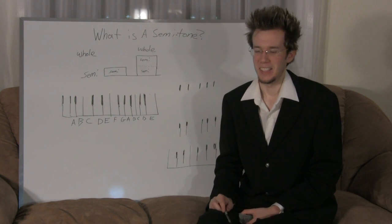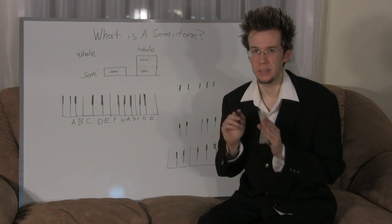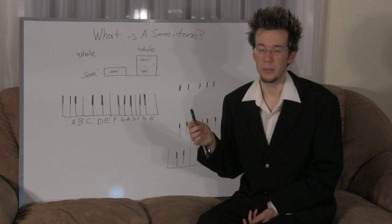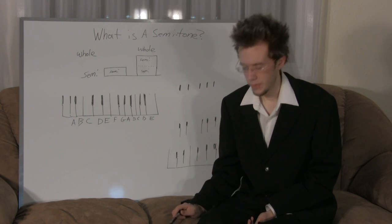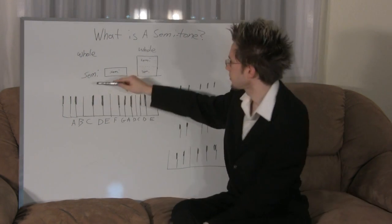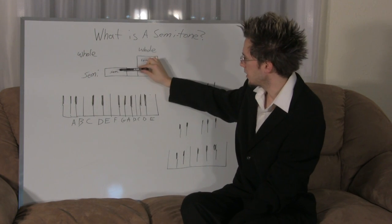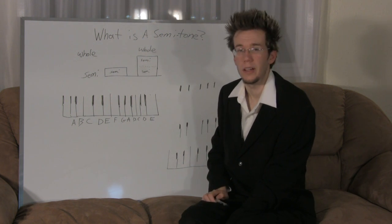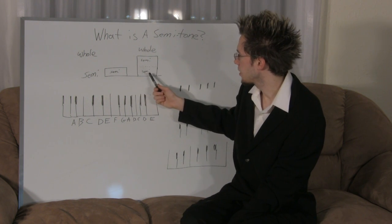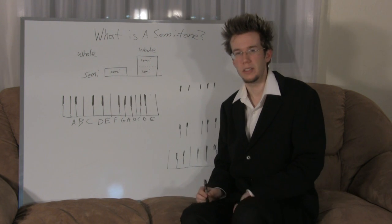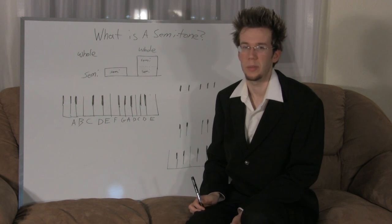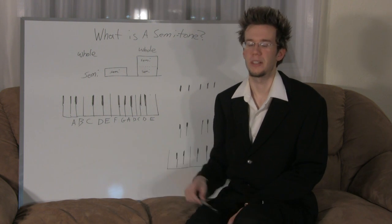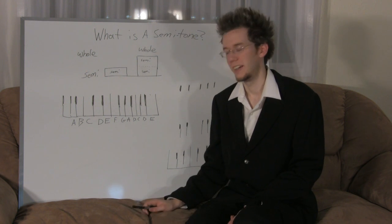So a semitone is the closest two notes can be together. Now the other important thing to understand is what is a whole tone. A whole tone is basically two semitones put together — that equals one whole tone. Think of it as: semitone is the smallest amount, and if you combine two of those smallest amounts together you get a whole tone. Semi can also be called a 'half tone' — half plus half equals whole — so you can say half tone or semitone, either works fine.